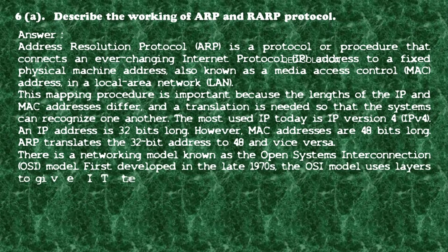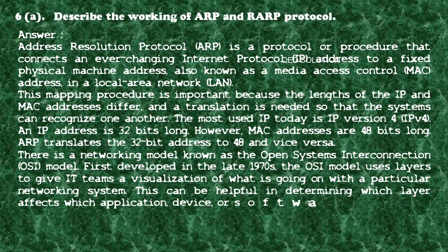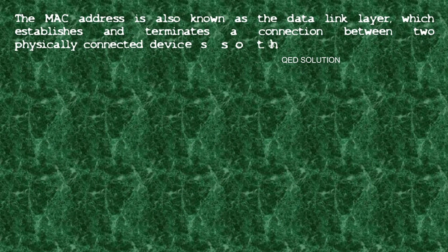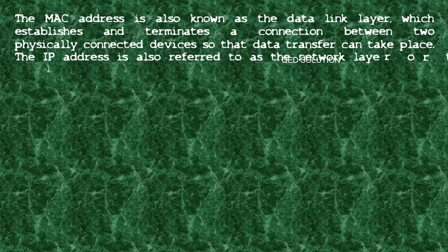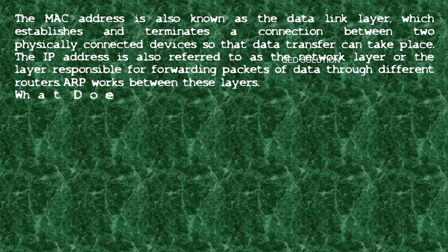The OSI model uses layers to give IT teams a visualization of what is going on with a particular networking system, helping determine which layer affects which application or device. The MAC address corresponds to the data link layer, which establishes and terminates a connection between two physically connected devices for data transfer. The IP address corresponds to the network layer, responsible for forwarding packets of data through different routers. ARP works between these layers.